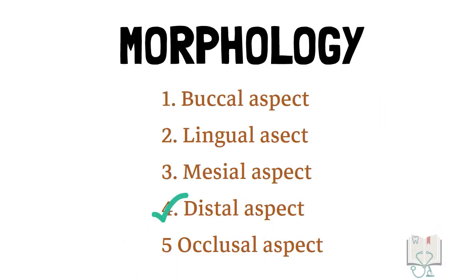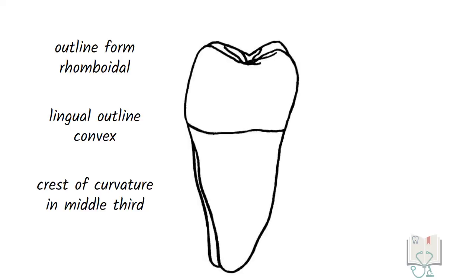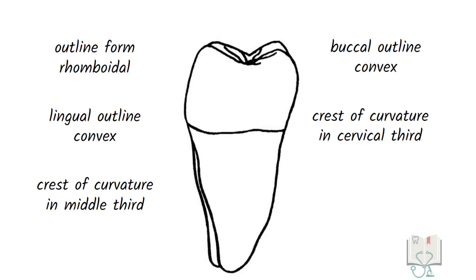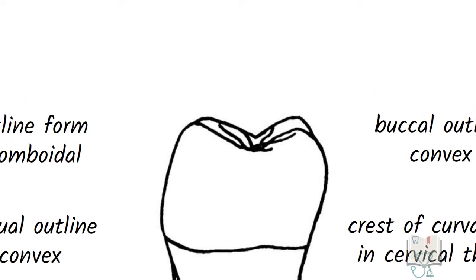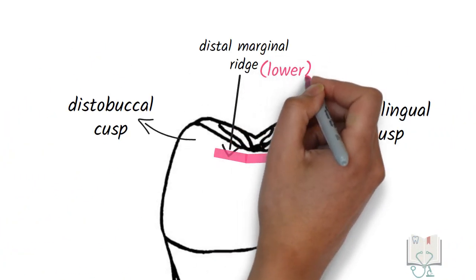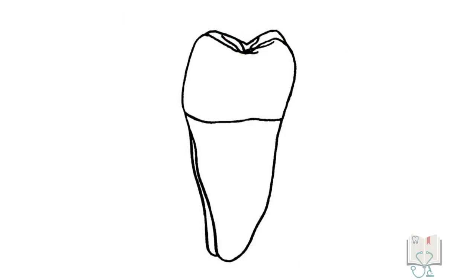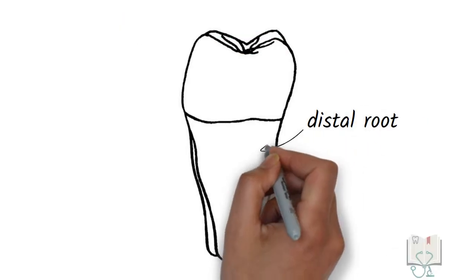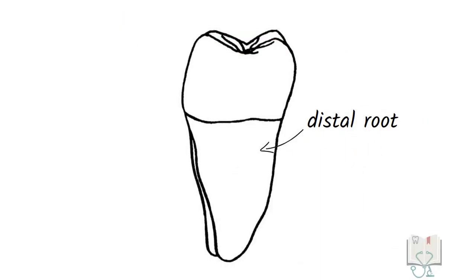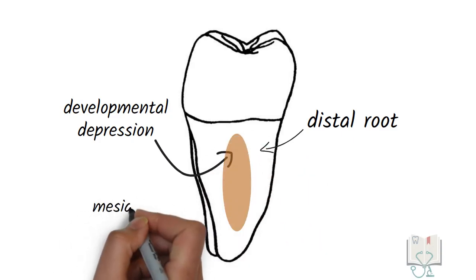Next, the distal aspect. The features of the outline form from the distal aspect are the same as from the mesial aspect. However, the distal marginal ridge is lower than the mesial marginal ridge, because of which more of the occlusal surface is visible from the distal aspect. The distal root is seen in front, which is conical in shape and has a developmental depression, while the mesial root is seen partially.